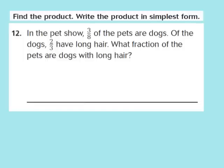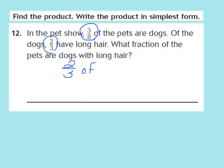Now let's take a look at question number 12. We need to find the product and write it in simplest form. The word problem says: in the pet show, 3/8 of the pets are dogs. Of the dogs, 2/3 have long hair. What fraction of the pets are dogs with long hair? So I need to find 2/3 of the 3/8 of the pets that are dogs, which means my problem becomes 2/3 of 3/8.